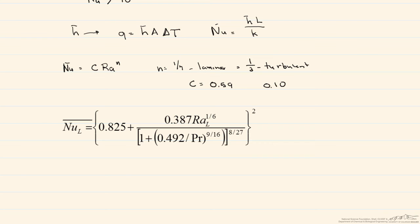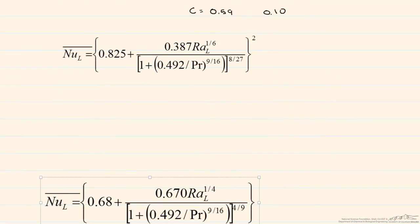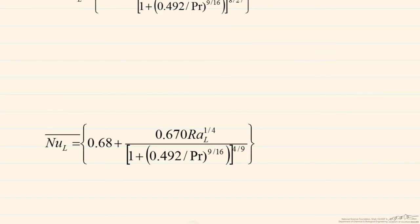However, we can get an even more accurate correlation just for laminar flow by using this one. The thing to keep in mind, however, is that in order to use this, the Rayleigh number has to be less than 10 to the 9th.